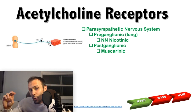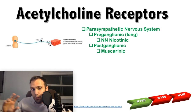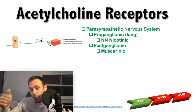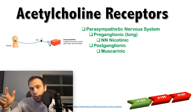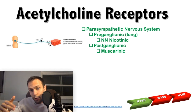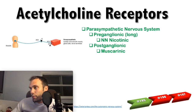The parasympathetic division is the cranial sacral outflow division. Cell bodies are located in cranial nerves: CN3 with the ciliary ganglion, CN7 with the submandibular and pterygopalatine ganglia, CN9 with the otic ganglion, CN10 the vagus nerve, and then S2 through S4 also provide parasympathetic innervation.